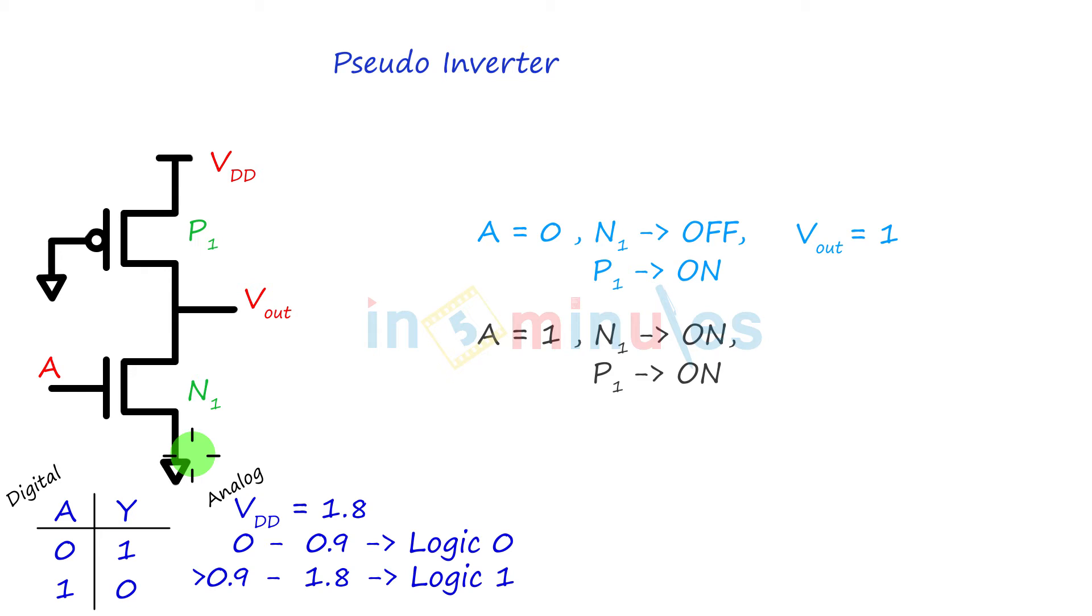Mind you, what did we want at the output when A is equal to 1? We want 0 at the output. How do we ensure that output is 0 and not 1? It's a very simple thing.